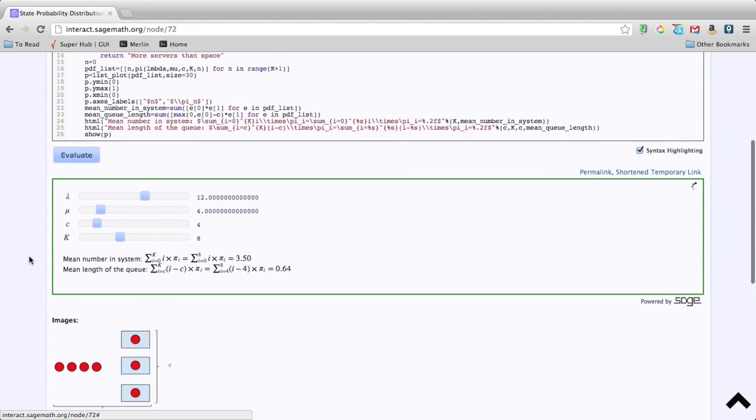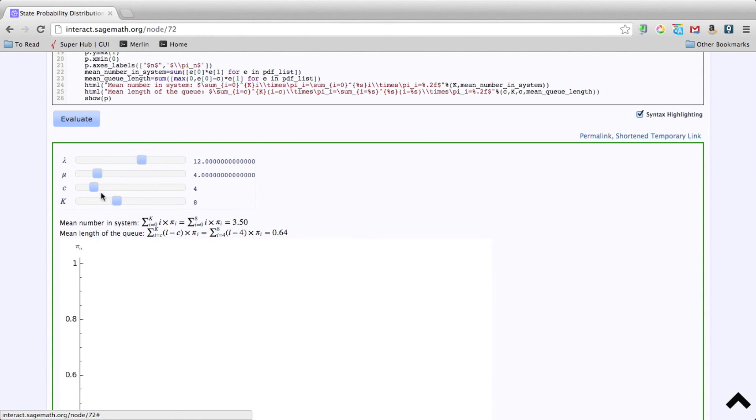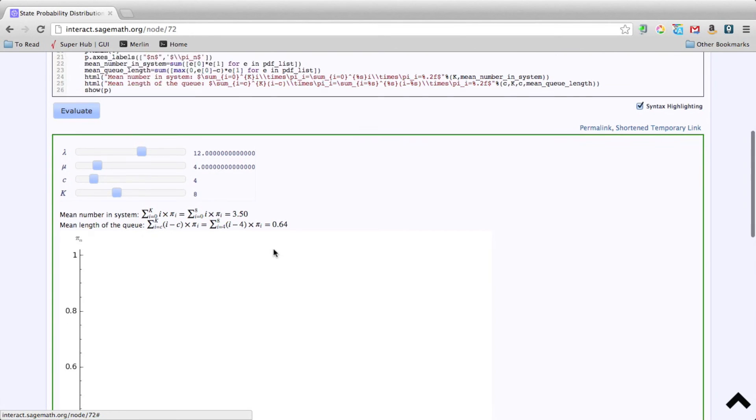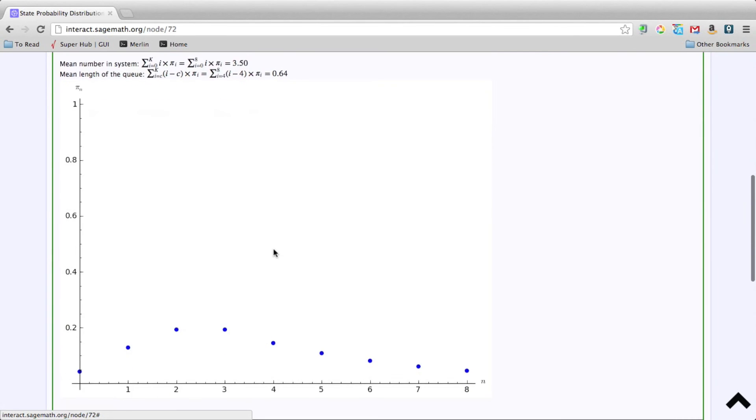If we evaluate the code, it comes set up with a bunch of default parameters. But it also calculates, thanks to our pi's, we can calculate the mean number in the system. That would be the sum from i equals 0 to k of i times pi i. In this particular case, we have an arrival rate of 12 customers per time period, a service rate of 4 customers per time period, so every server can serve 4 customers in a particular time period. We have 4 servers and a total size of 8. Then we expect to see, on average, 3.5 people in the system. And the mean length of the queue would be just about half a person.